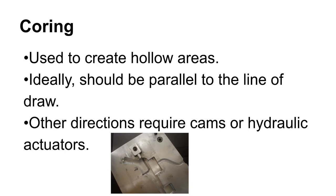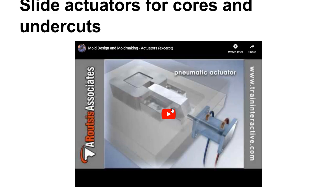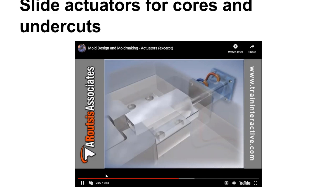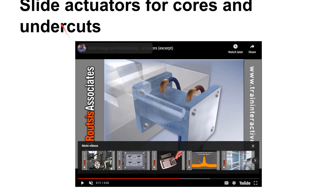We talked about coring — if you're on campus you can see in the display case outside ET 112 a wax injection mold for an investment casting process that has a little cam-actuated core. All of the cores in the mold we looked at are cam actuated — all done with inclined planes. But you can also have powered cores: hydraulic, electric, and pneumatic actuators, as shown in the Train Interactive video series, which has a really nice collection on injection molding.